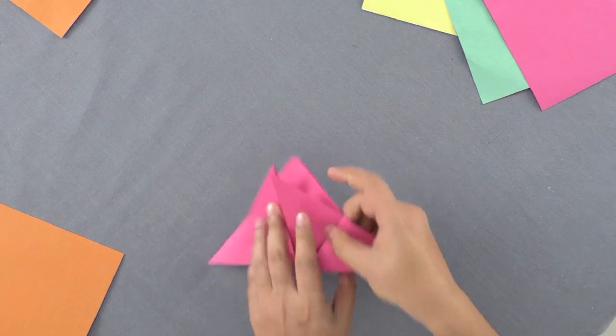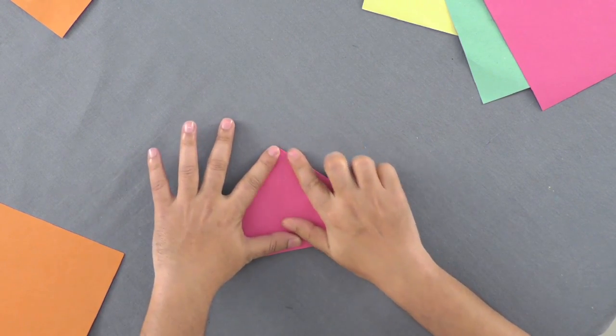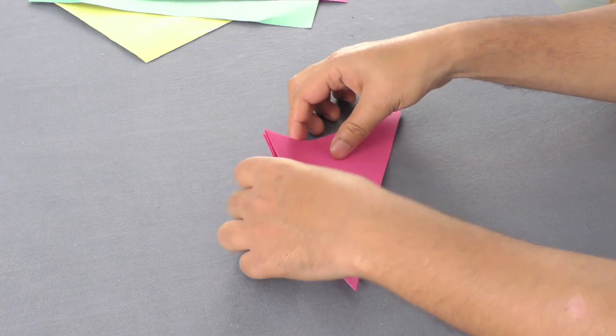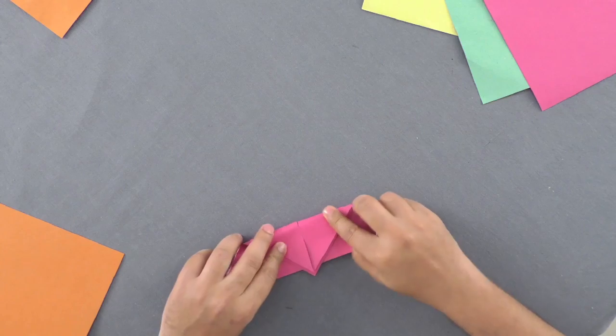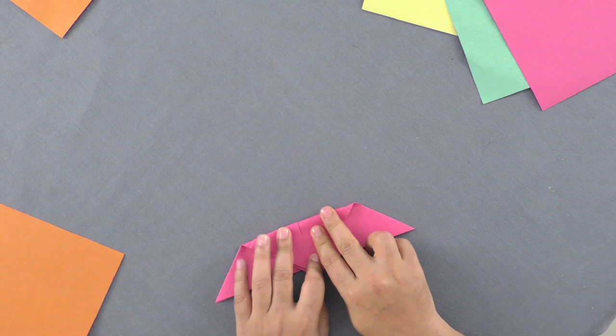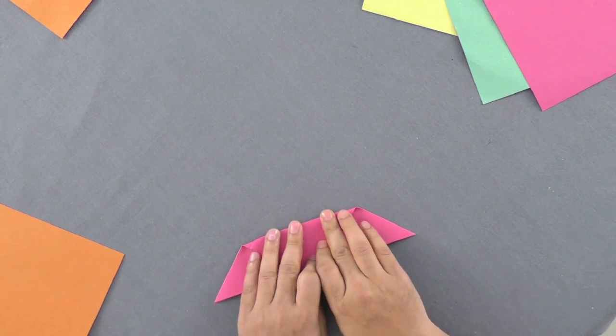Now, turn the folded paper upside down. Next, you have to fold the apex of the triangle downwards forming an inverted board shape.